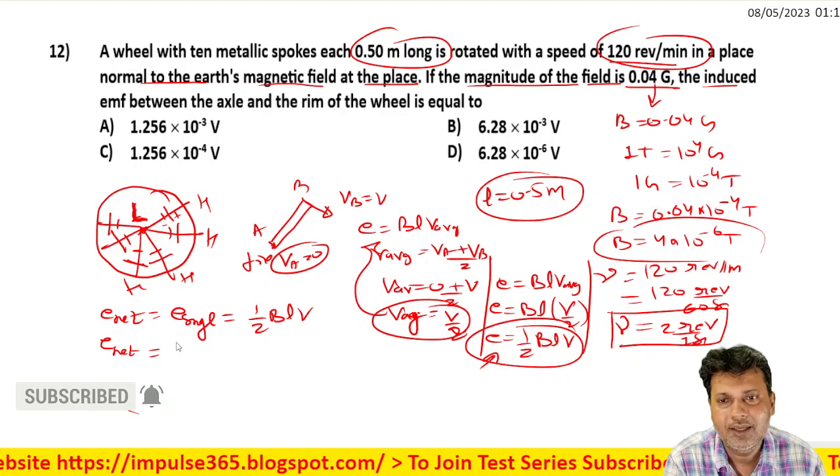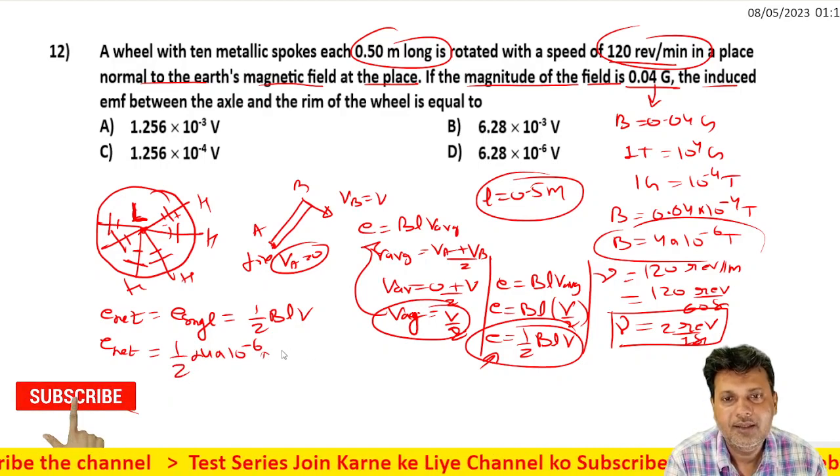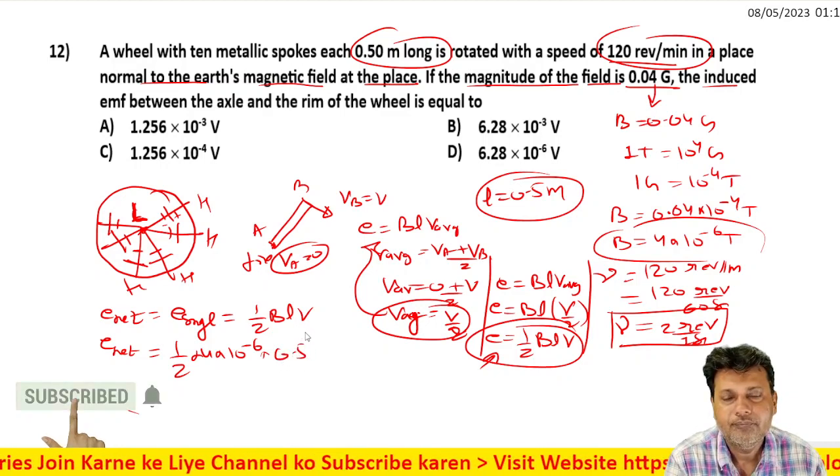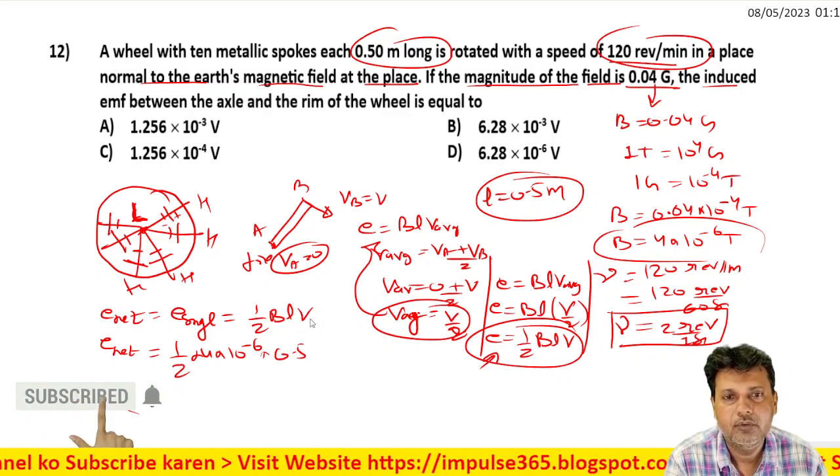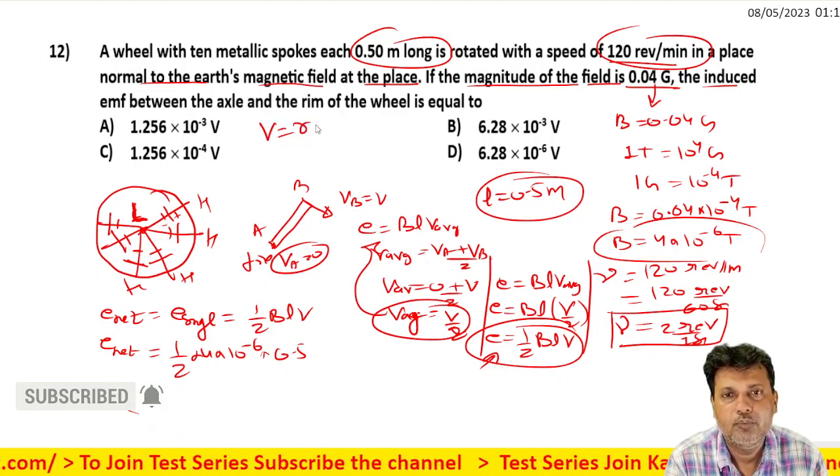The net EMF value will be calculated. B's value is 4 into 10 to the power minus 6, L's value is 0.5, and omega's value is given.